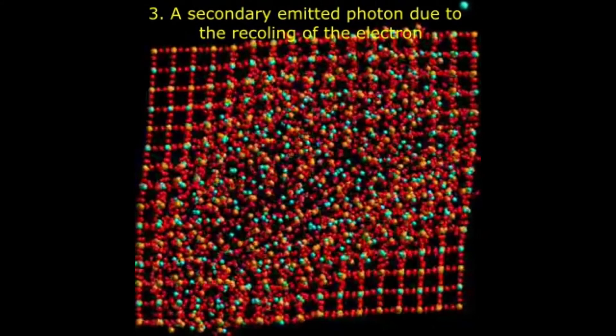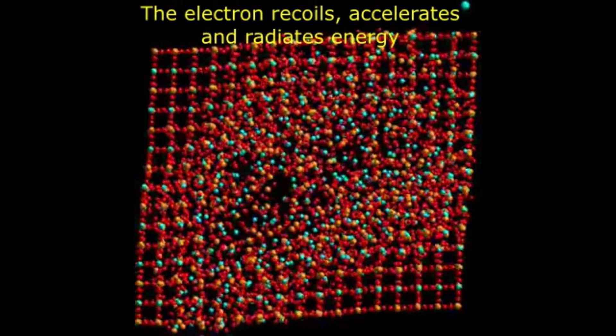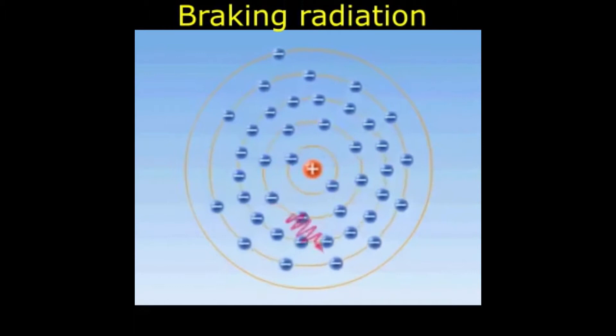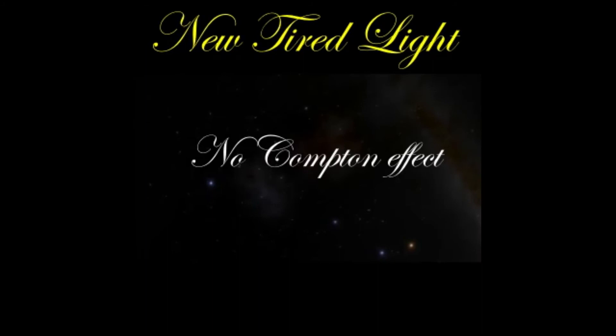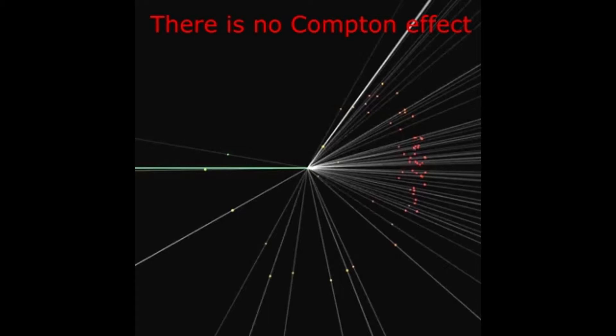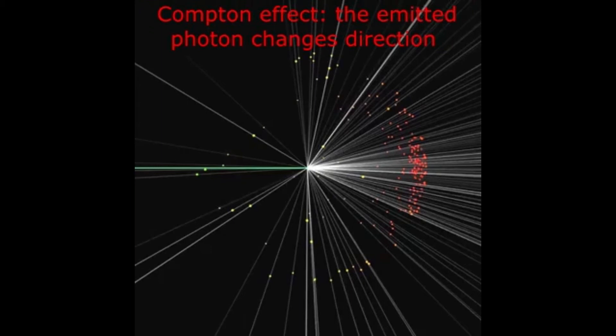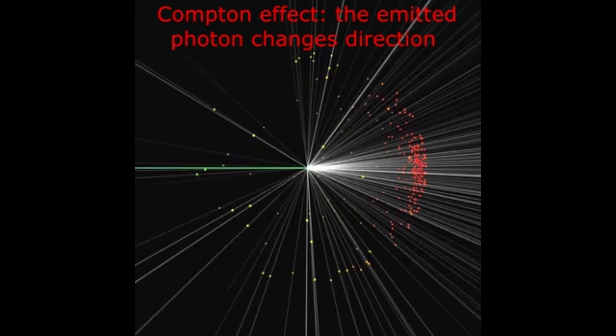The energy lost by the incoming photon due to a photon-electron collision is transferred to the electron, which recoils and accelerates. Whenever an electron accelerates, it radiates energy until it is brought to rest — this energy is called bremsstrahlung, or braking radiation. There is no quantum scattering effect in New Tired Light, because that effect describes electrons which simultaneously absorb and re-emit photons without any transfer of energy. Moreover, in quantum scattering the emitted photon changes direction, causing the image to blur after several collisions. With New Tired Light, the image of the photon remains clear.